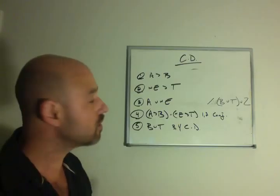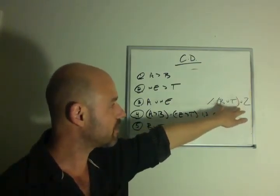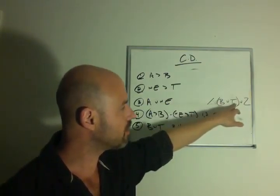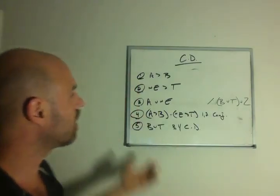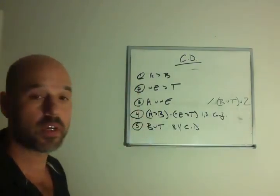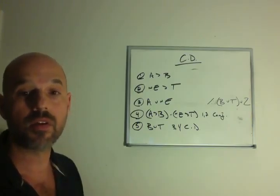Now, in the conclusion, you're asked to conclude that B or T is the case or Z. Now notice that Z doesn't occur anywhere in this proof. So what are you going to have to do? You're going to have to use addition.